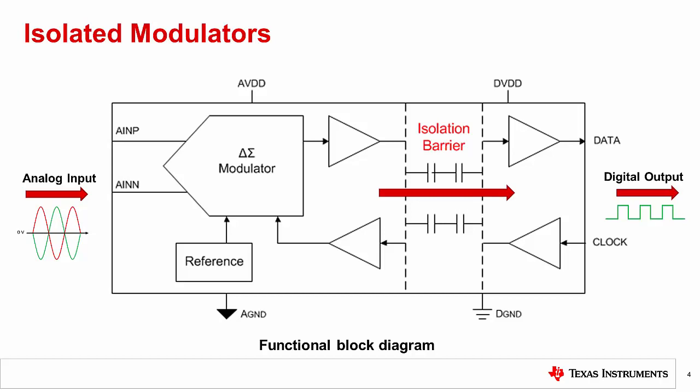TI's capacitive isolation technology offers two different types of isolation: basic and reinforced. Basic isolation is implemented with a single capacitive barrier, while reinforced uses two capacitive barriers in series. For more information on these two types of isolation, please visit ti.com/isolation and click on the isolated ADCs link.